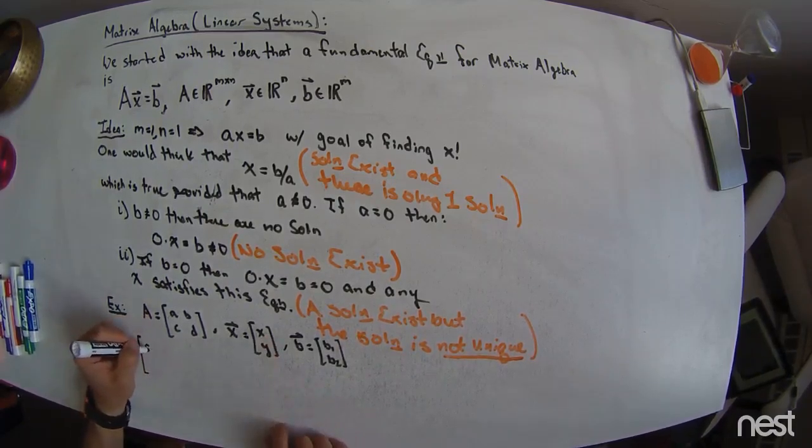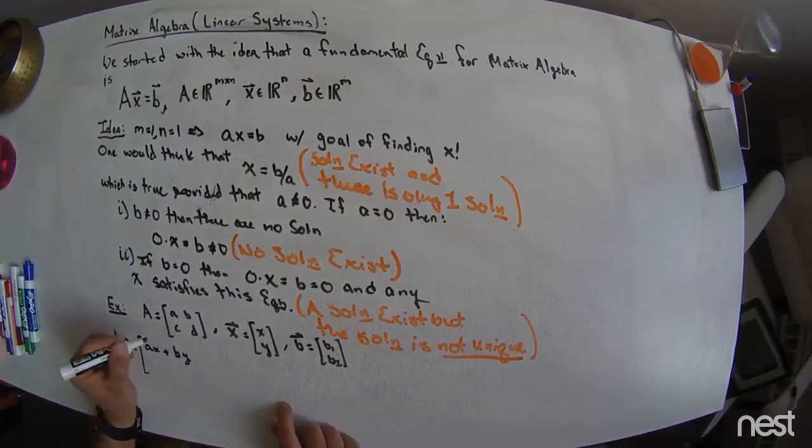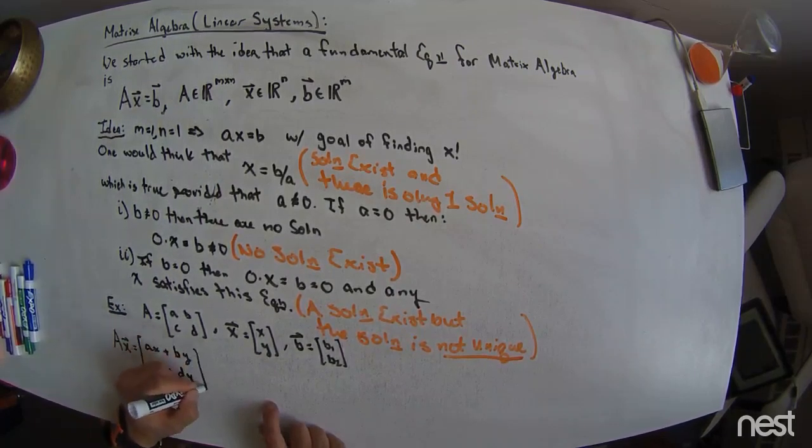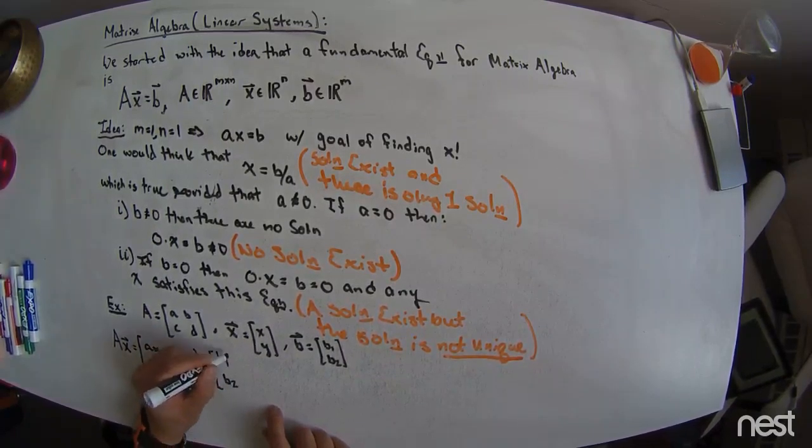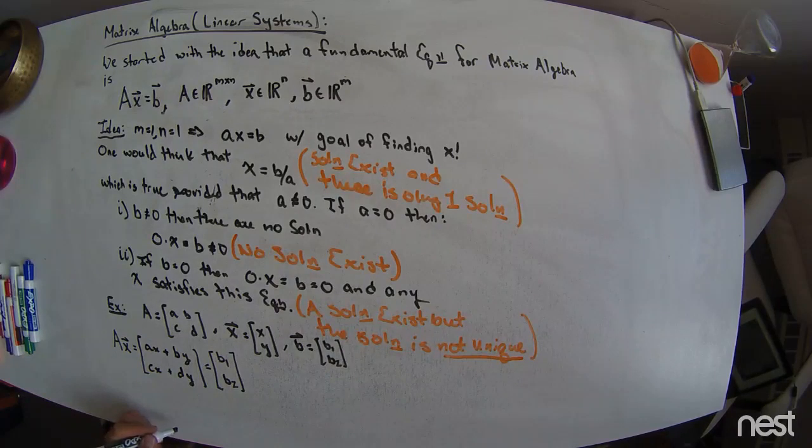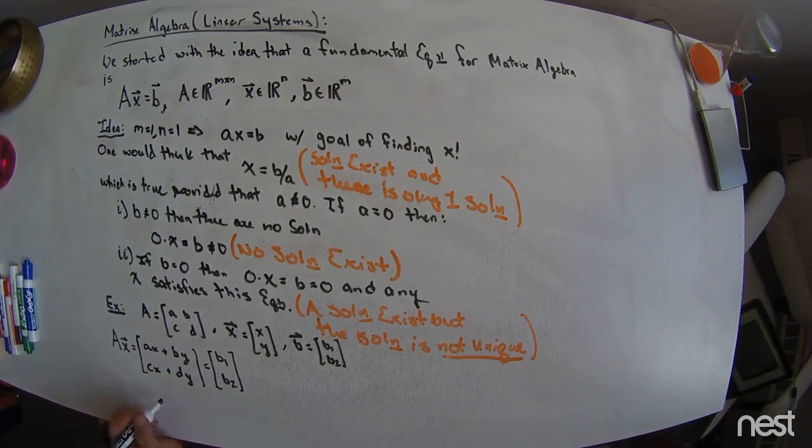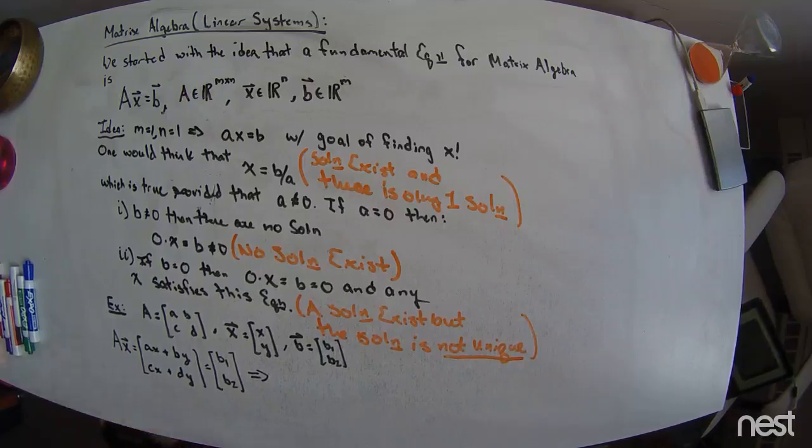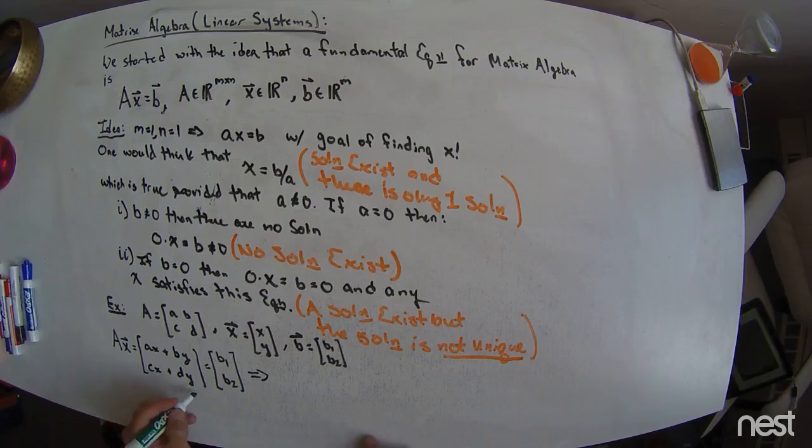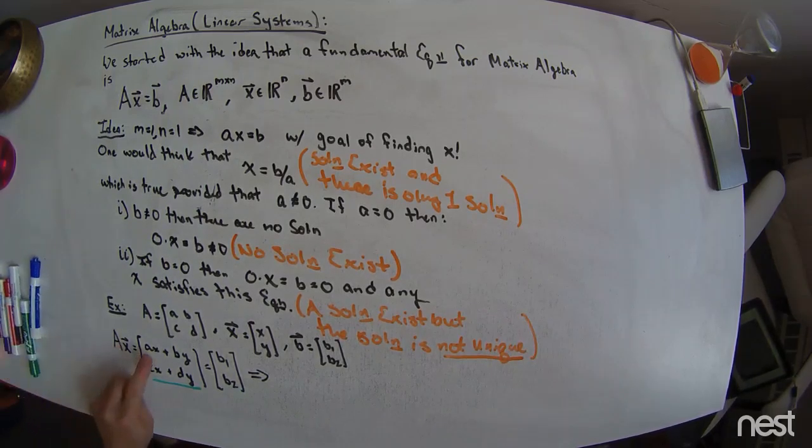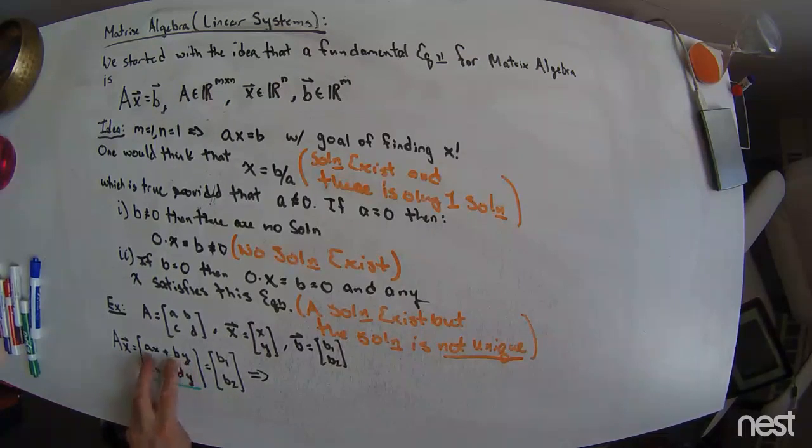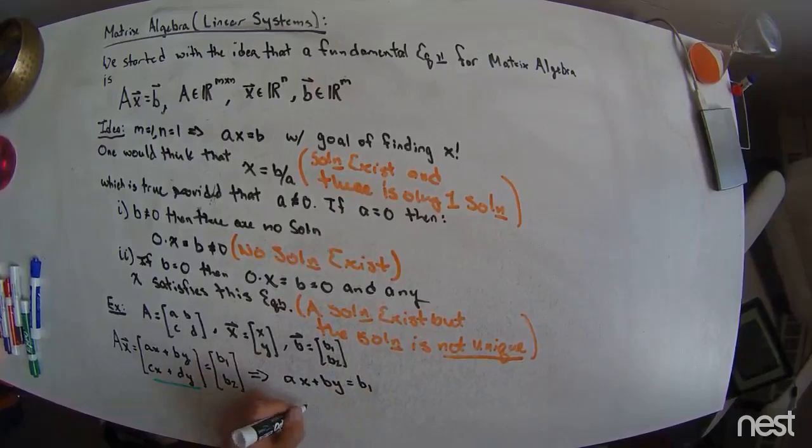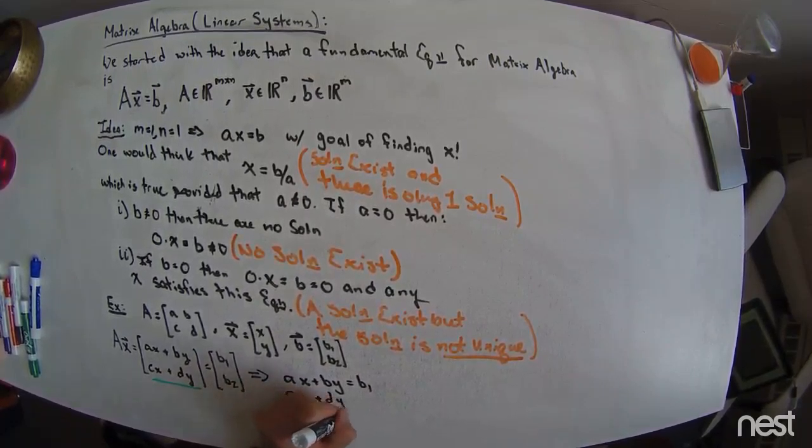That 2 by 1 is Ax plus By in the first component. Then Cx plus Dy in the second. And then I have b1 and b2 on the right-hand side. So this is really any time we start increasing dimension. Now what we're talking about is many equations. Because of the way matrix multiplication is defined, what we want to notice is x is being raised to the first power, y is being raised to the first power. They're multiplying constants and they're added together. So we have Ax plus By equals b1 and Cx plus Dy equals b2.